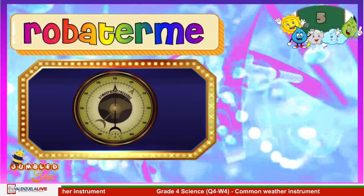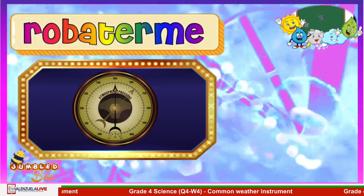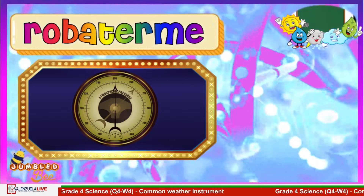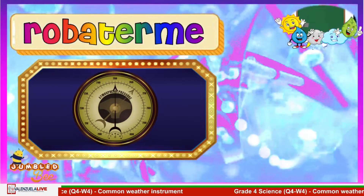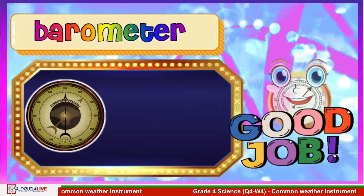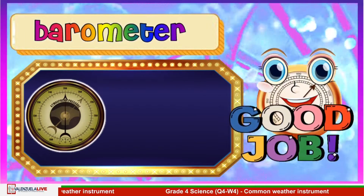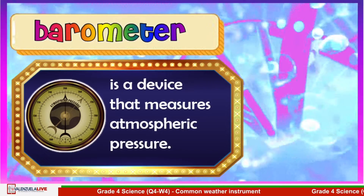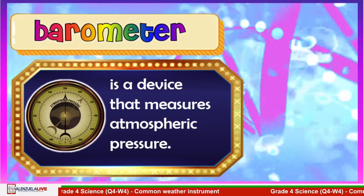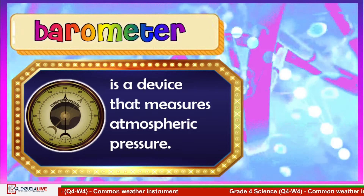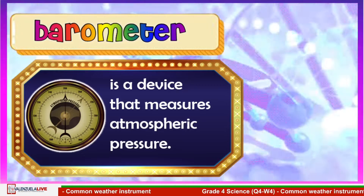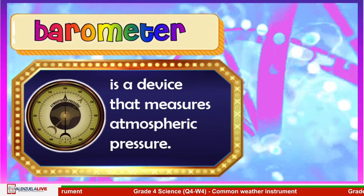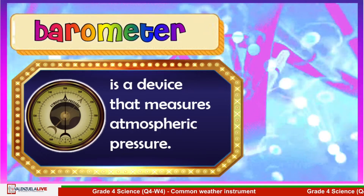Let's have the next instrument. If your answer is barometer, you are correct! Good job. A barometer is a device that measures atmospheric pressure. It also helps meteorologists to track the weather, predict storms and weather patterns, as well as determining altitude. These factors help us with how we measure weather.